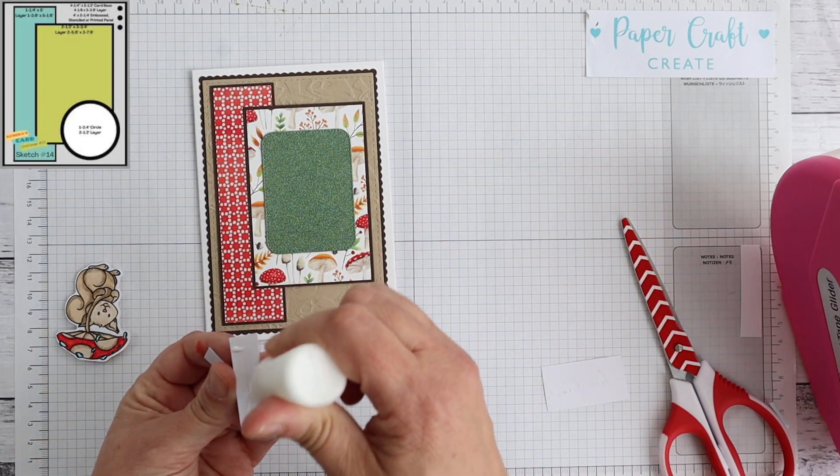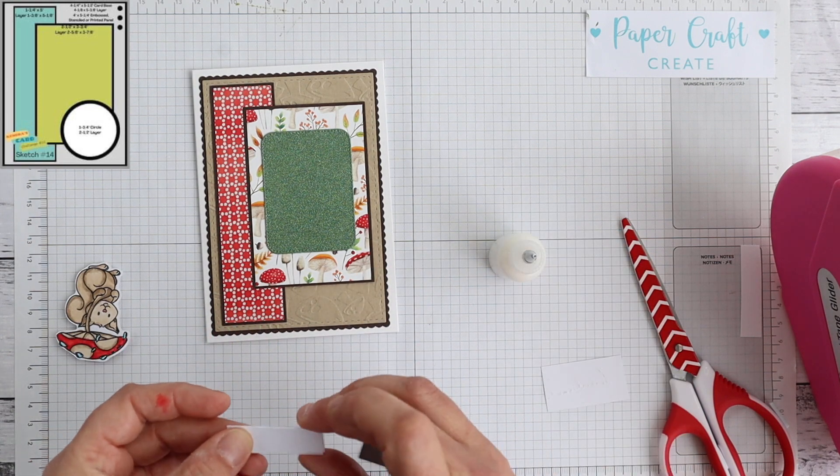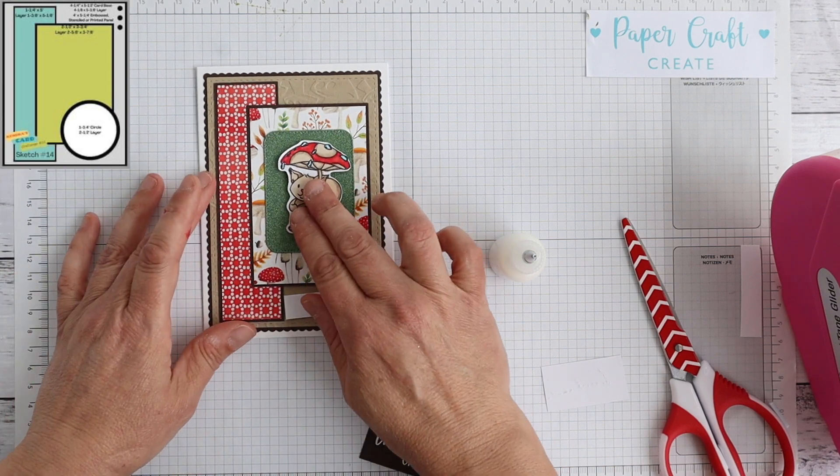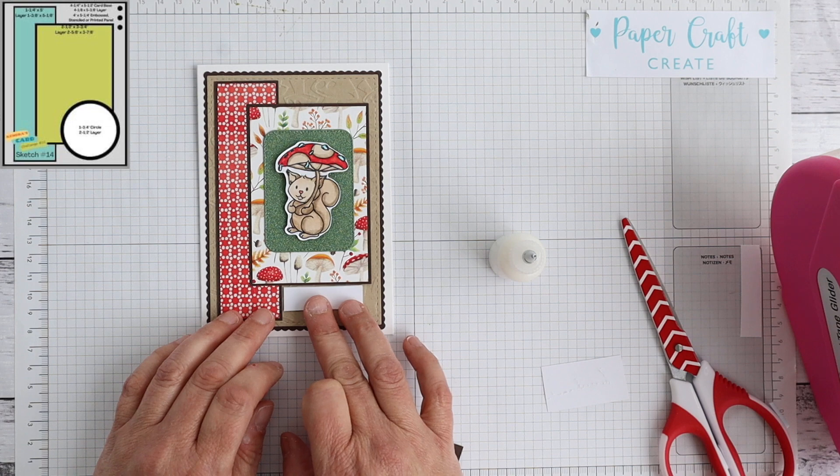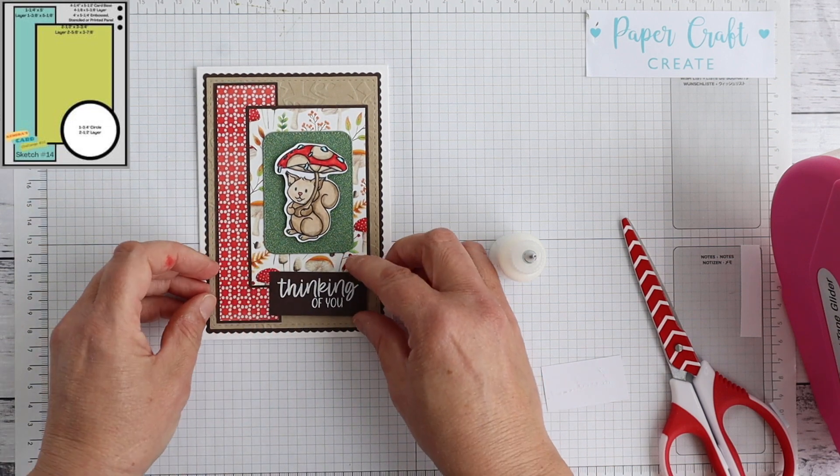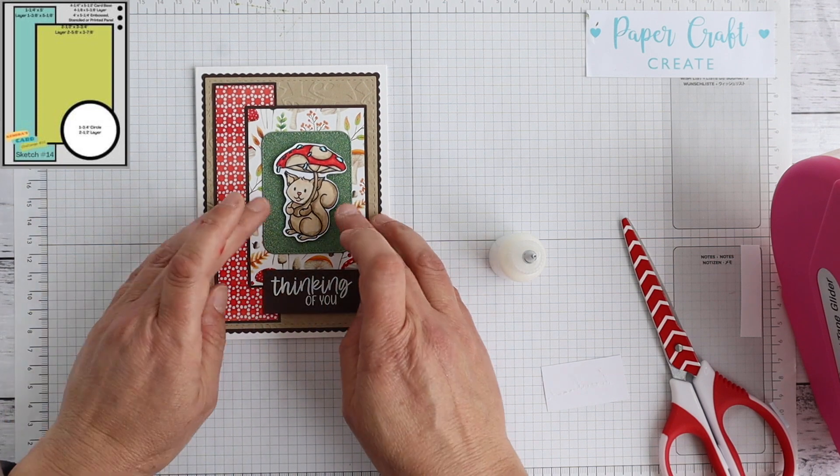So what I have done is just put my little sentiment there at the bottom. But in fact I've taken the whole focal point and moved it up into a cornered rounded rectangle piece there.